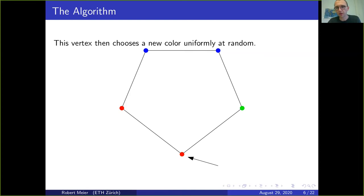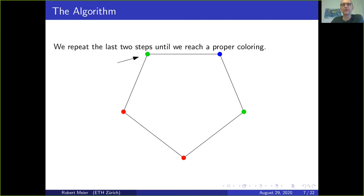In a sense, the vertex doesn't know its neighborhood—it only knows whether there is a conflict. We then repeat the last two steps: pick a new conflicted vertex, recolor it, and so on until we converge to a proper coloring.